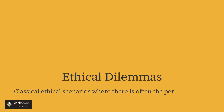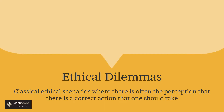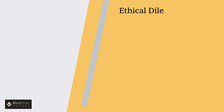Ethical dilemmas are classical ethical scenarios where a situation is presented, often with the perception that there is a correct action or stance that one should take. An example of this includes the famous trolley problem, where you can either opt to redirect the train to save a family of five, or you can decide to take no action.